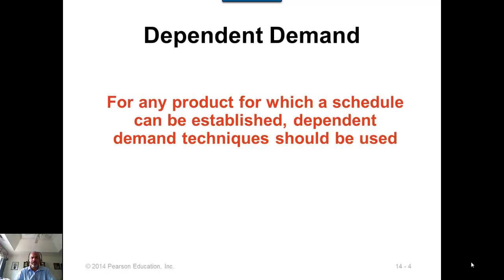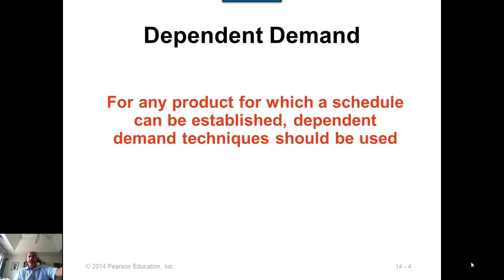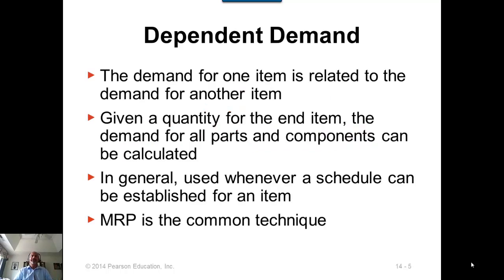Dependent demand items are items whose demand is dependent upon the schedule of other items — specifically, the items required for the production of the final product. We can also look at dependent demand items as items whose production we schedule based on the production of some other item. Scheduling of this item is dependent upon the schedule of another item, so demand for one item is related to the demand of another.